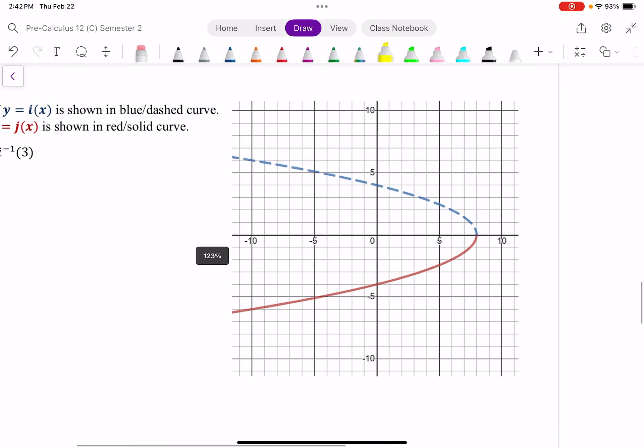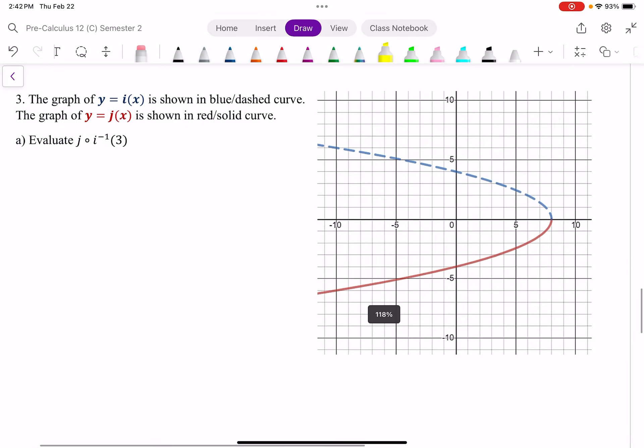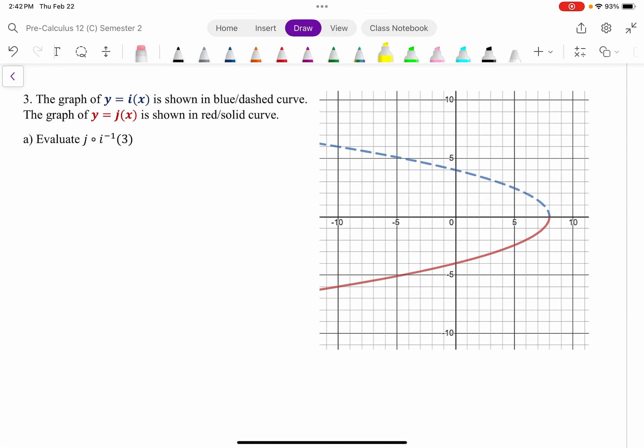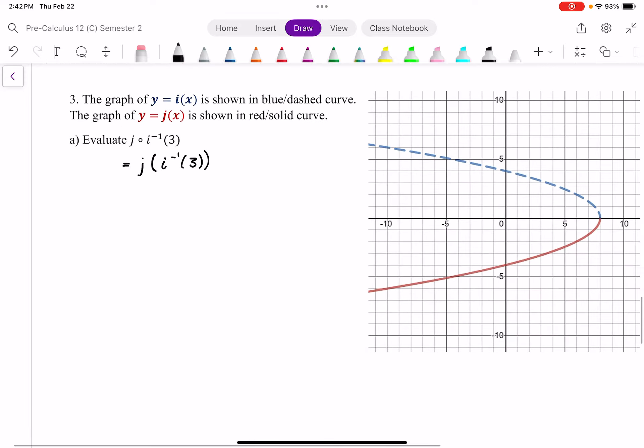Right, last question. I have a graph here of i of x in blue, and j of x is in red, in solid. So I want the equation of j of i inverse, which keep in mind, can also be written like this. That's j of i inverse of 3, actually, not x. All right. Fair amount to think about here.